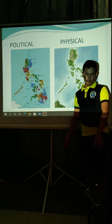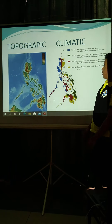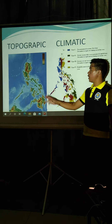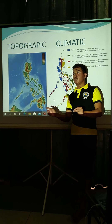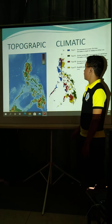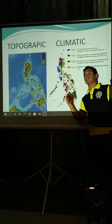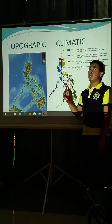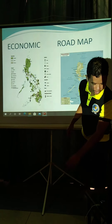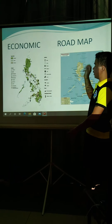The comparison between topographic and climatic maps: the topographic map talks about the elevation and measurement of the land here in the Philippines, while the climatic map talks about the weather conditions of every region or province here in the Philippines.